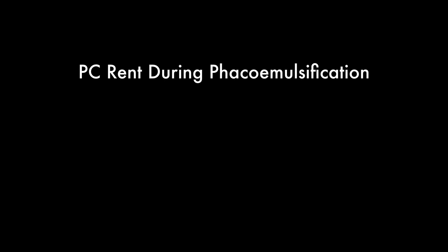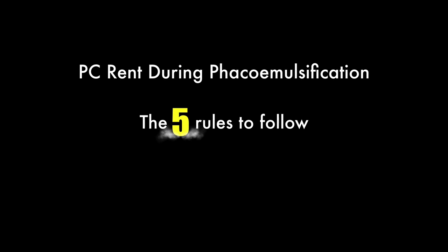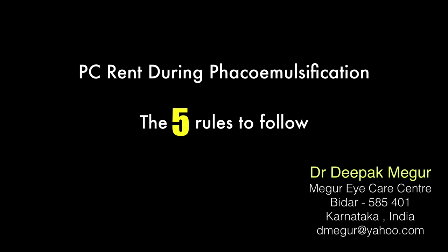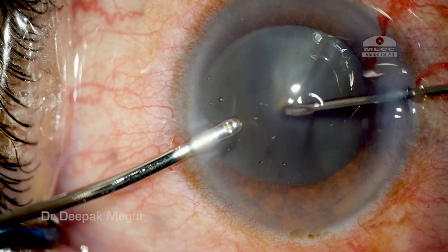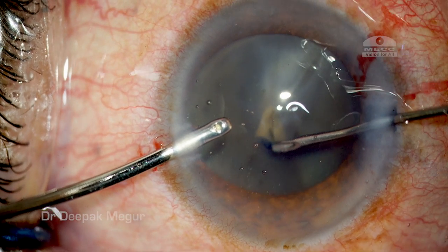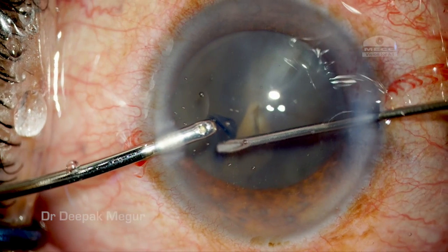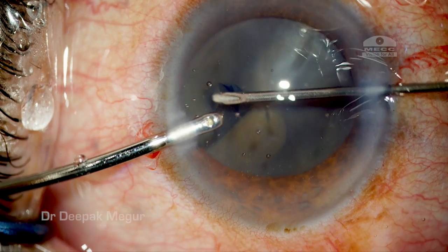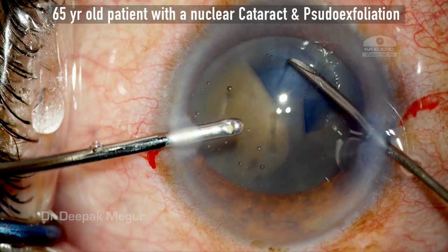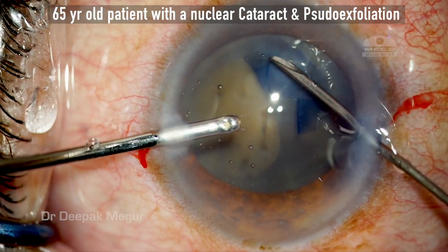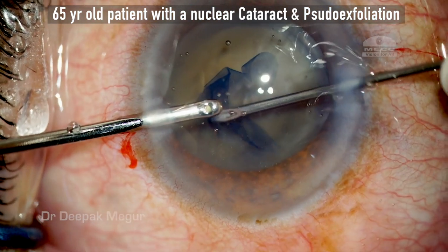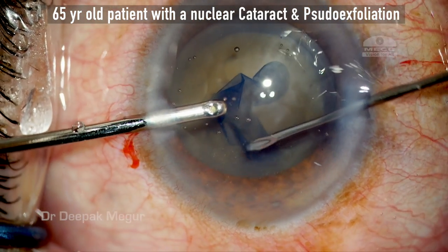Hi dear friends, today I'll be sharing a few practical tips on managing a case with posterior capsule rent during phacoemulsification and how to prevent a nucleus drop. This looks to be a routine case — a 65-year-old patient with a nuclear cataract.